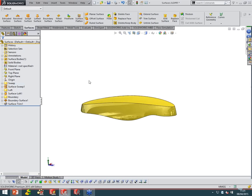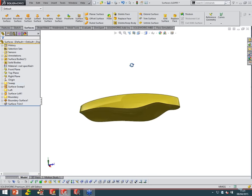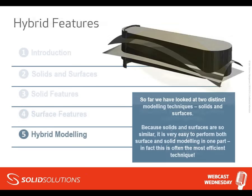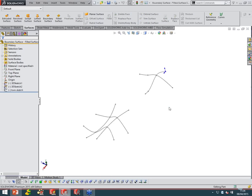So the trim and knit tools bring the surfaces back to our solid geometry — they trim everything back, knit everything together, and form our solids. And because we can switch between the two very easily, that's why we sometimes use something called hybrid modeling to help out with geometry creation. So far, we've looked at two separate modeling techniques — solids and surfaces — and we haven't really mixed the two together. But because they're so easy to swap between, we can actually do both surface and solid modeling in one part file.